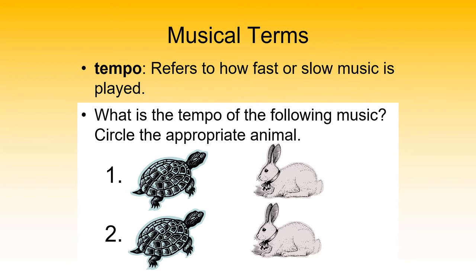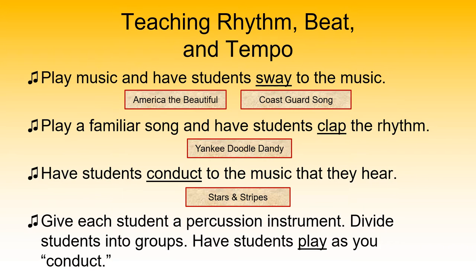Another important musical term is tempo, which simply refers to the speed at which music is being played — is it fast or slow? When working with very young children, one way to help them articulate this is to give them a sheet with a slower animal like a turtle and a faster animal like a rabbit, then have them circle the appropriate one when they hear music. To teach rhythm, beat, and tempo, you could have students sway to music, clap to a familiar song, conduct like an orchestra conductor, or give them a percussion instrument to play as you conduct.